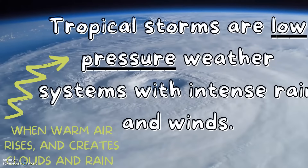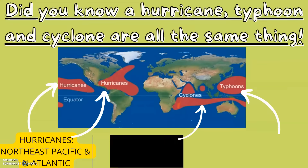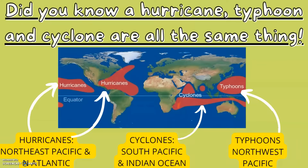Tropical storms are low-pressure weather systems with intense rainfall and winds. Low pressure just means when warm air rises. Did you know that a hurricane, typhoon and cyclone are all the exact same thing? They are just all named differently, dependent on the location they were formed. For example, hurricanes are formed in the North East Pacific and North Atlantic. Cyclones are formed in the South Pacific and Indian Ocean, and typhoons are formed in the North West Pacific.